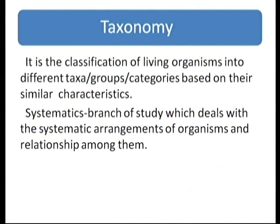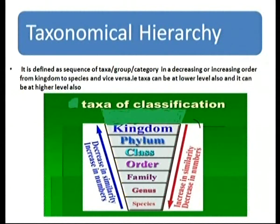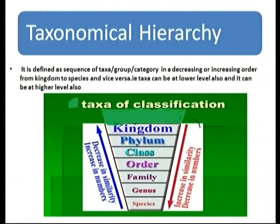Taxonomical hierarchy is a stair-like or leveled structure. It is defined as the sequence of taxa in decreasing or increasing order from kingdom to species or species to kingdom. As we move from species upward to the highest rank, the similarities among organisms decrease but the number of organisms/species increases. Conversely, moving from kingdom downward to species, there is an increase in the similarity of characters.